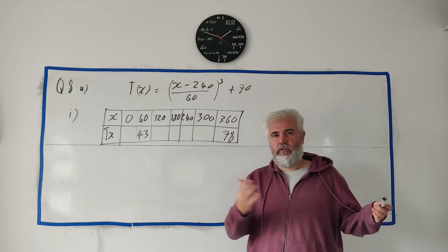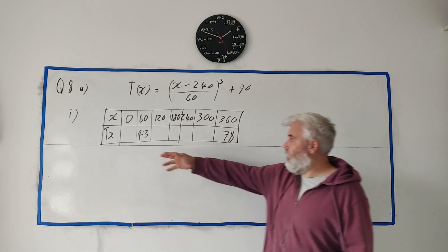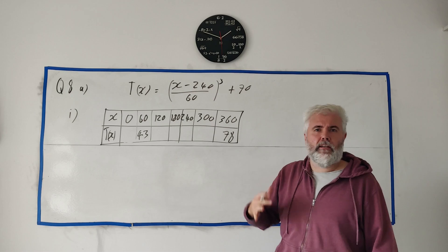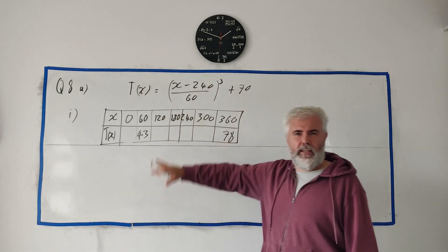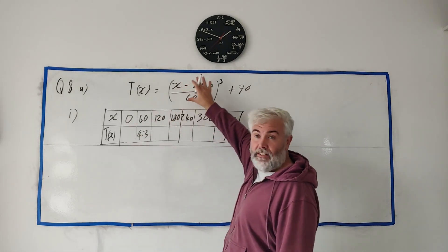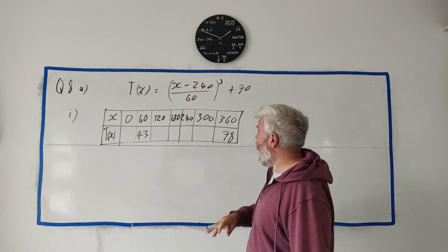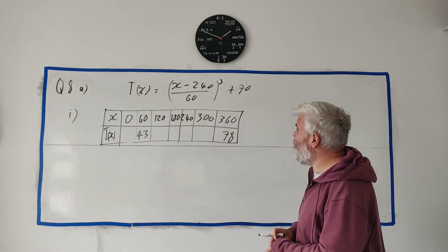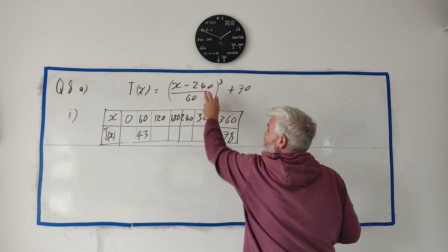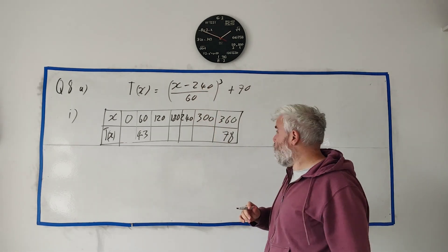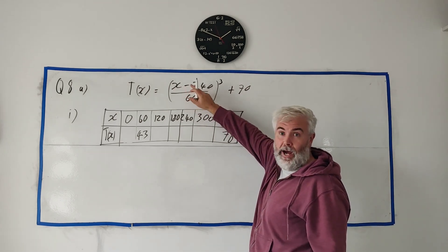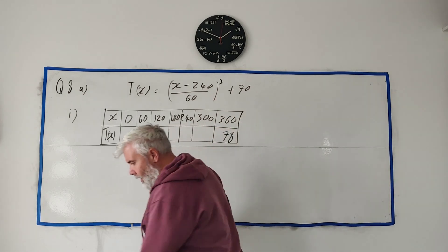In question 8, they tell us about a t-shirt company that has sales. Their sales are T(x) here, and the day they have the sales is x. They give us a table here and they simply ask us to fill in this table. So this is just taking this number here, putting it into this formula, getting an answer. Your calculator will do it, but actually the sums work out quite even. 0 minus 240 is 240, 60 goes in 4 times, 4 to the power of 3 is 64.